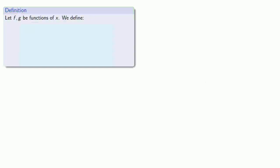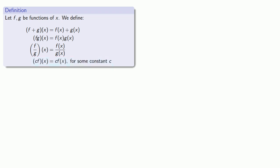Before we go on, a quick reminder of how we write functions in algebra. If I have two functions f and g, and I want to talk about their sum f(x) + g(x), a standard compact way of writing this is (f+g)(x). Likewise, the product f(x)·g(x) can be written as (fg)(x), their quotient as (f/g)(x), and a constant times a function as (cf)(x).